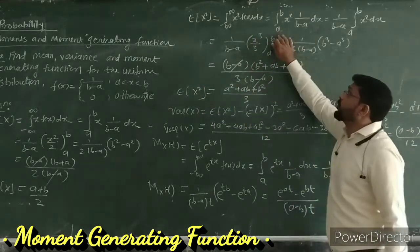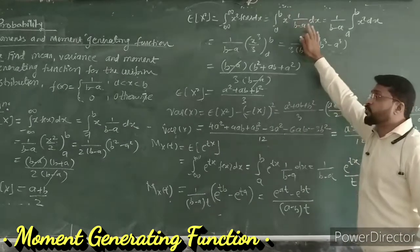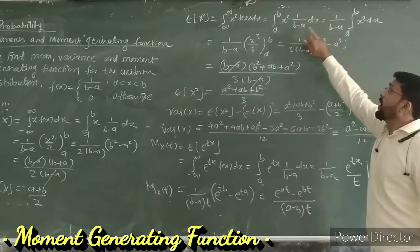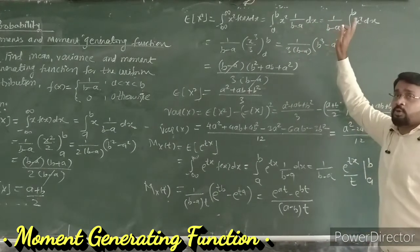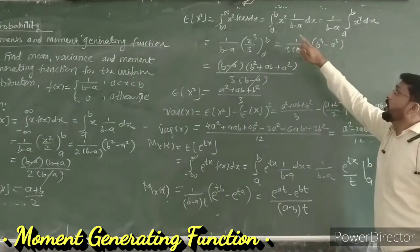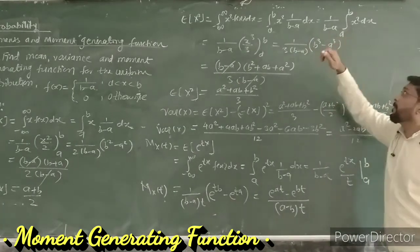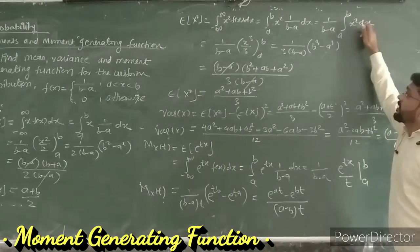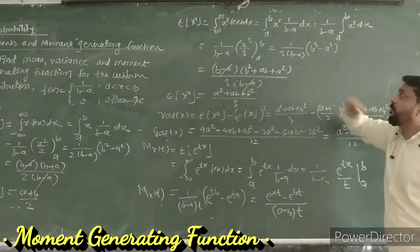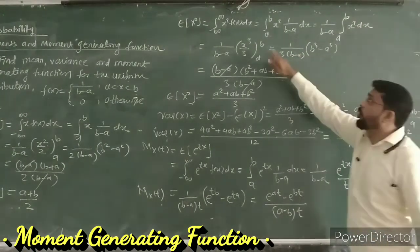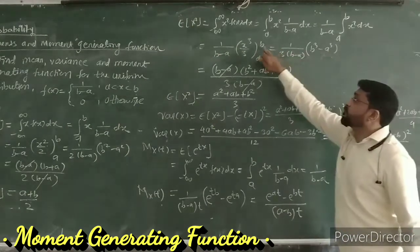Since the function is defined from a to b, the integration is from a to b of x²·(1/(b-a)) dx. Integrating x² gives x³/3, and then we substitute the upper and lower limits.